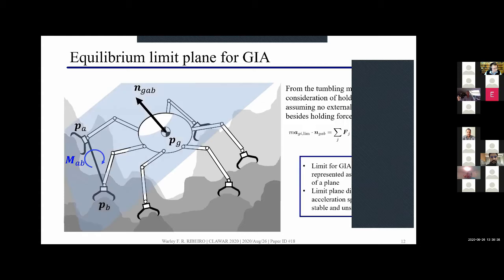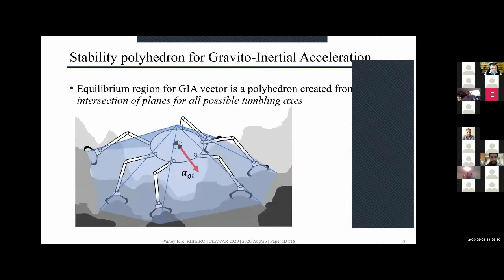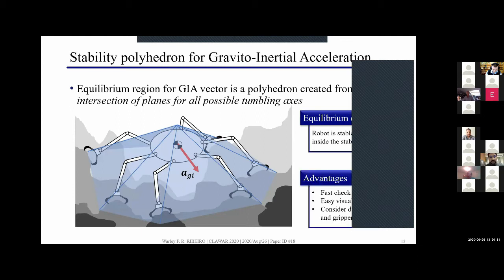Mathematically this equation represents a plane in the space and divides this acceleration space into two regions, one for stable and other for unstable GIA vectors. If you consider all the possible tumbling axes we have to compute the intersection of all these planes that we can obtain. This gives us this polyhedron here that we can call the stability polyhedron for GIA and to check if the robot is in equilibrium we simply have to compute this polyhedron and check if the GIA vector is inside it.